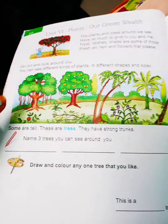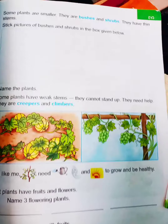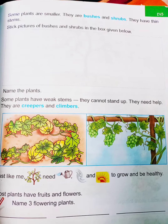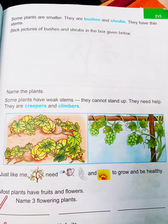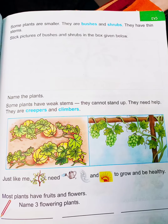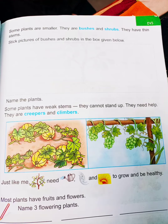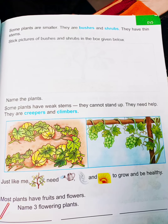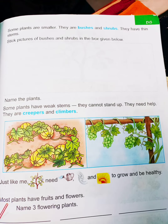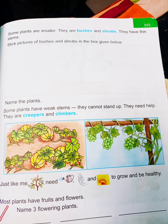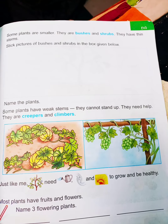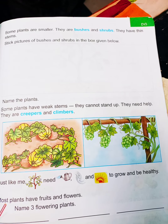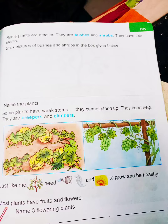Shrubs and bushes are small plants with hard, strong stems. Sunflower, hibiscus, and rose are examples of bushes. Some plants are small but weak — these are called herbs, and they have a soft green stem.